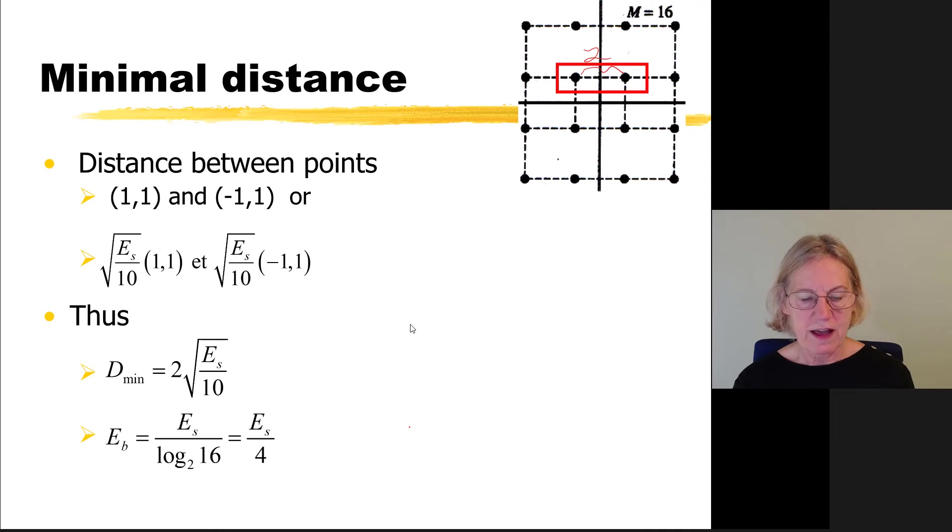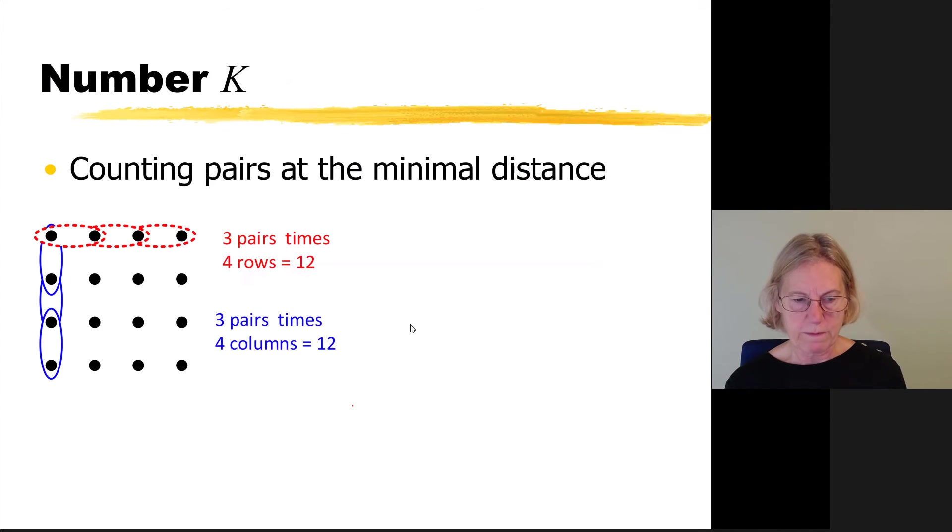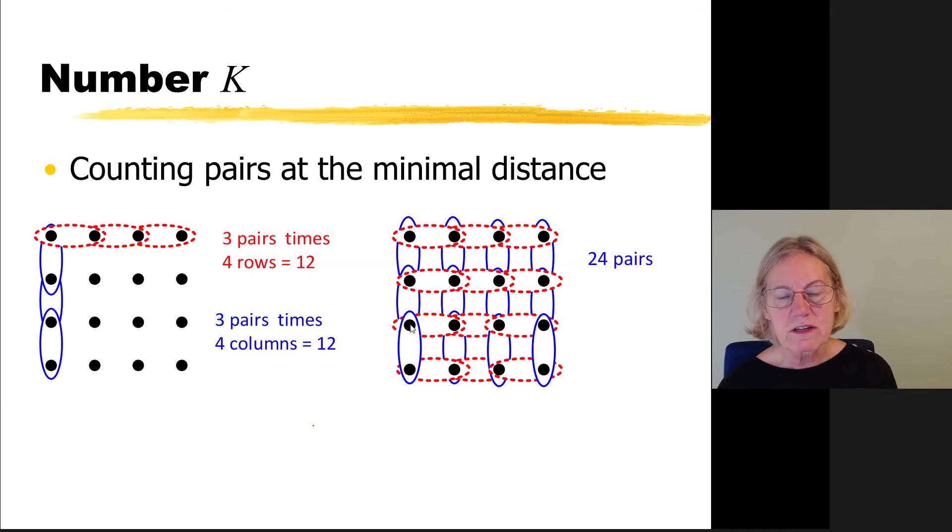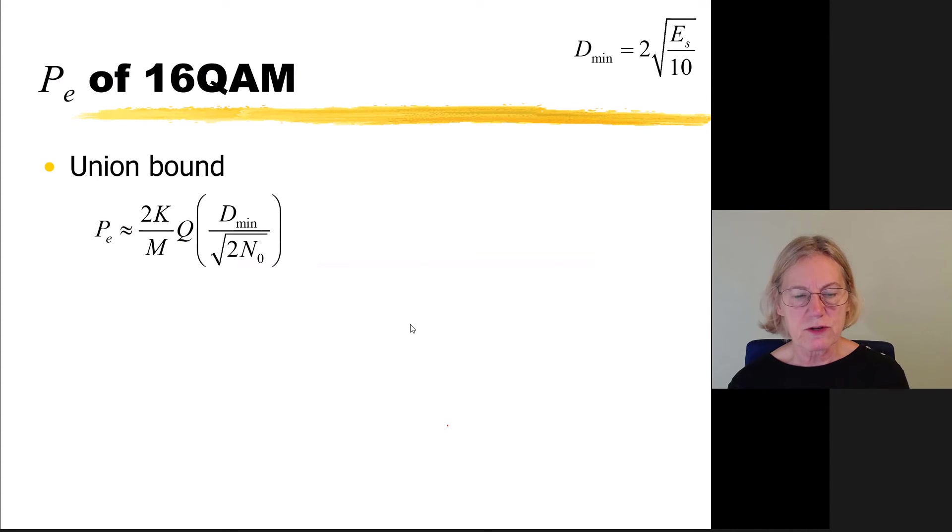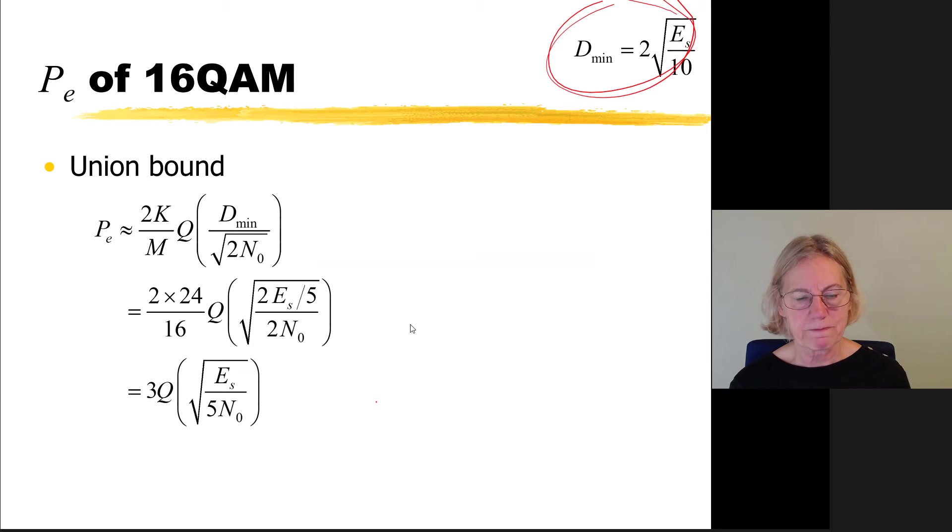I have my dmin now. I can go into my equation for the bit error rate. And of course, I'm going to want to use this in terms of Eb. And for 16-QAM, Eb is equal to Es over 4. So one more thing remaining, I have to know the number of pairs at the minimal distance. So I just go and I count them, which ones are the closest. And if I look at any given row, I see that there will be 3 pairs per row, and there are 4 rows, so I get 12 pairs in the red. And then I look at each column, and I see that in each column I will have 3 pairs at the minimum distance. So that tells me that in total, there are 24 pairs of symbols in the constellation which are at the minimal distance.